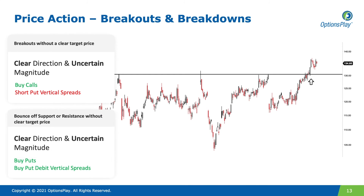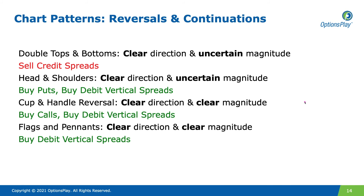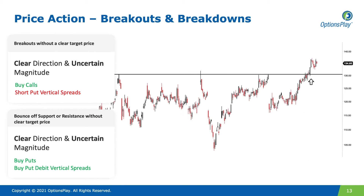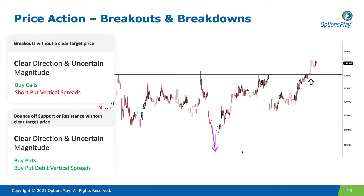For breakdowns, many times you have price history you can look at to determine how much lower an asset can break down. If you can see potential target prices from history, that's where you might want to look at buying puts or a put debit spread. For quick, fast moves, buy a put. If you have a clear target price, use a put debit spread, which gives a similar risk profile but with less risk than outright buying a put option. The choice between puts and a put debit spread depends on how clearly you can see how far the stock is breaking down.